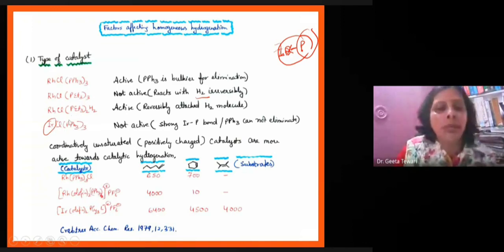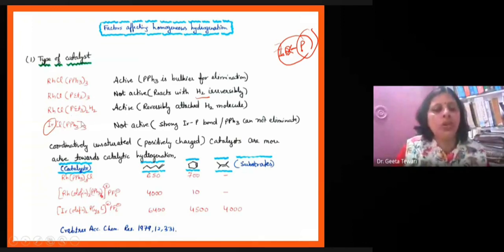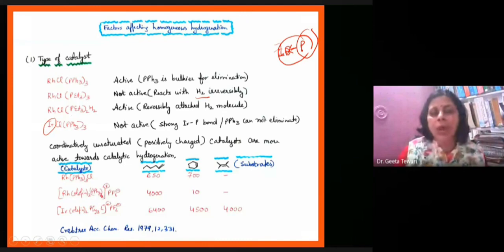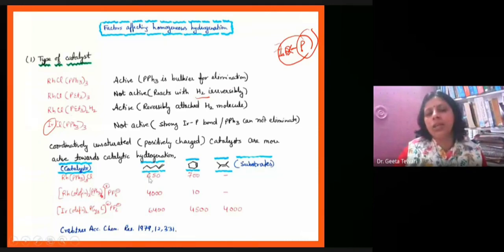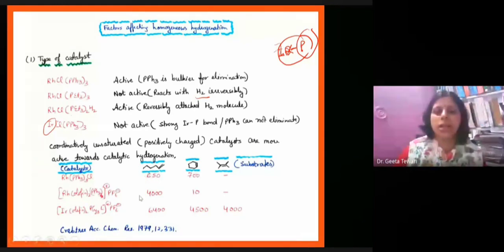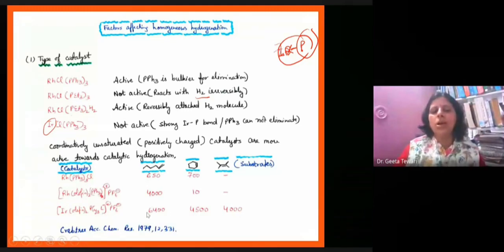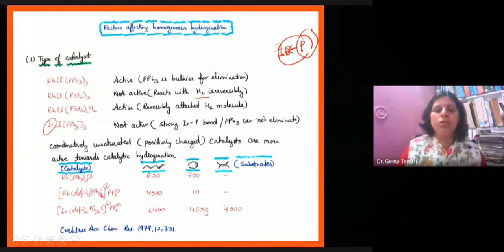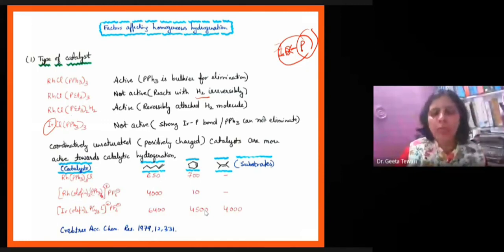For the iridium complex, if the Ir–P bond with PPh₃ is too strong, the PPh₃ will not be removed, and so catalytic hydrogenation will not proceed. This is why the Ir–PPh₃ complex is not active — the bond is too strong. As positive charge on the metal center increases, the catalysts are more active compared to neutral species. The Crabtree catalyst shows about 10 times greater reactivity, and you can see that as positive charge increases, the rate of hydrogenation increases.